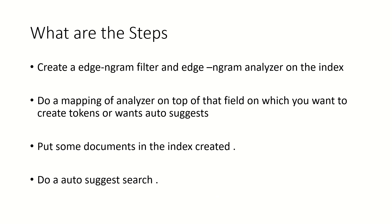These are the steps we are going to follow. First, we'll create the edge ngram filter and edge ngram analyzer on the particular index. Let's say we have an index called 'product' containing documents with id, name, price, and quantity. Then we'll do a mapping of the analyzer on the field on which we want to create tokens or enable auto-suggest - such as the product name field. Finally, we'll put some documents in the index and do an auto-suggest search.